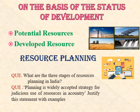On the basis of status of development, resources are classified into four types. First, potential resources — found in a region in abundance but not yet developed properly, for example solar and wind energy in Gujarat and Rajasthan. Second, developed resources — surveyed and quantified for utilization through available technology, for example coal and petroleum. Third, stock — resources that have the potential to satisfy human needs but the required technical knowledge to use them is not yet developed, for example hydrogen and oxygen in water can be a rich source of energy.